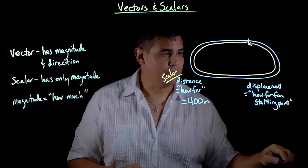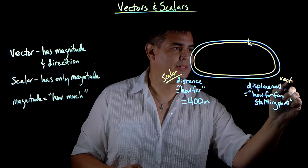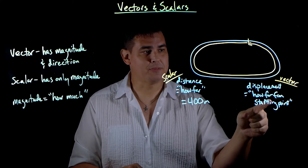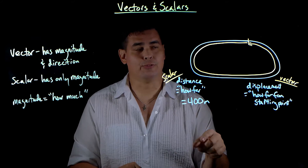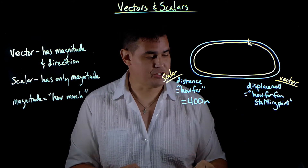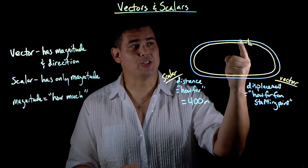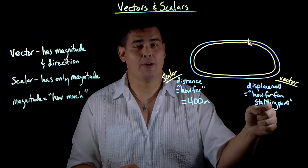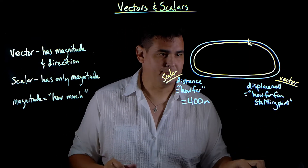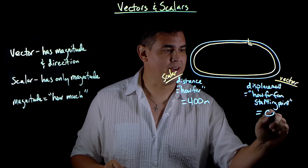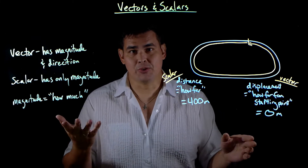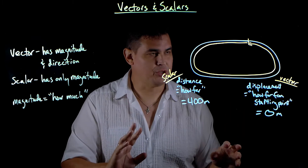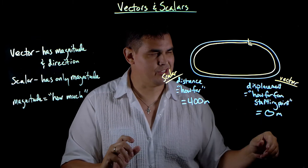Displacement is a vector. Displacement is how far you are from the starting point, measured by drawing an arrow from where you started to where you finished. In this case, if you started at the starting line, ran all the way around, and ended at the starting line, how far are you from the starting point? Well, that's easy — you're zero meters away. You're at the same point.